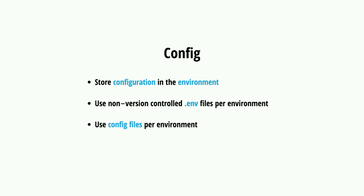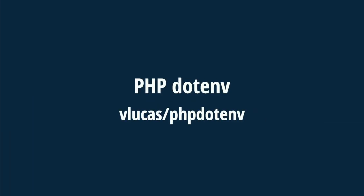It's also good practice to have different configuration files per environment. For example, I want a specific configuration for production and a different one for testing - like enabling Twig debug or disabling Twig cache on my local environment. I'll have one file called services.local.yml with different configuration than the file running on production. You can load those files based on the environment you're working with. In order to do this in Drupal, there is a project called phpdotenv. You only need to run Composer require on this project name to get it in your system.